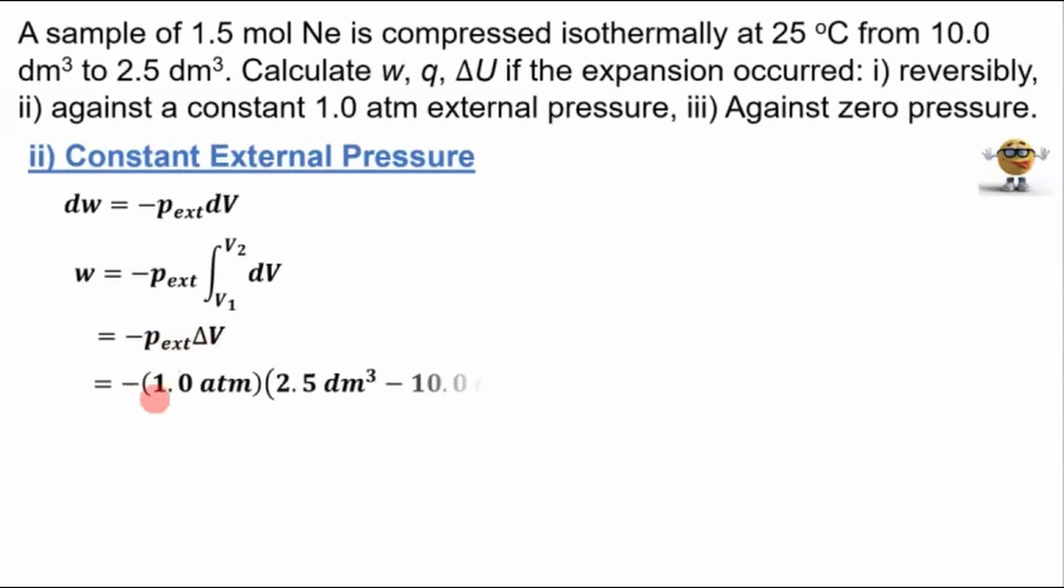We can plug in numbers here. We know what the external pressure is. It's 1 atm. We know what the volumes are. Final volume is 2.5 dm³, initial volume is 10.0 dm³. If we solve for this, we get a work equal to 7.5, and we have horrible units here, atm decimeters cubed. But I like to plug in the units and then convert after.